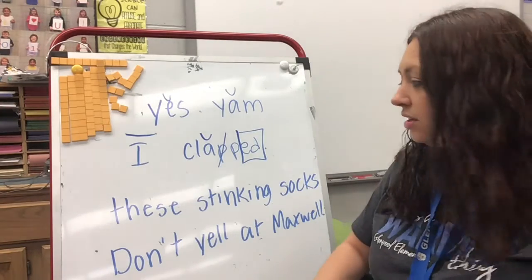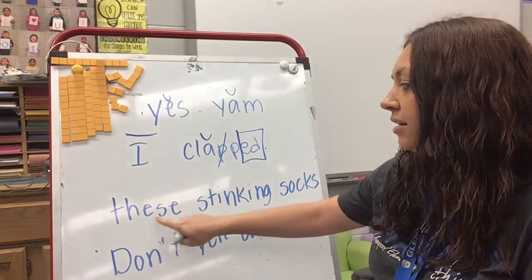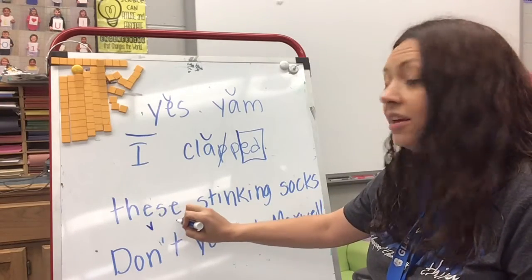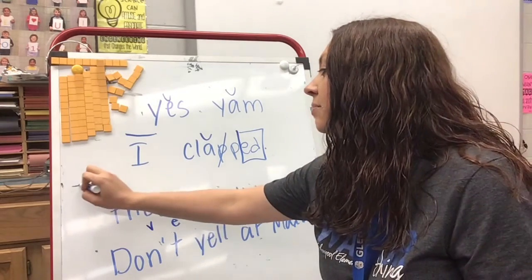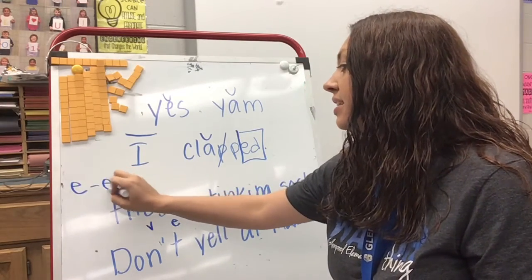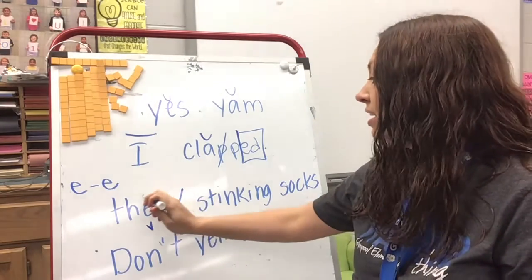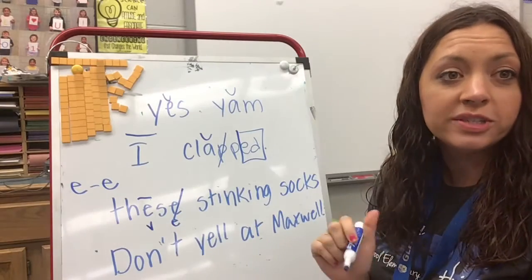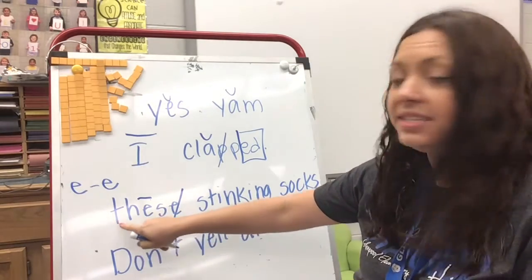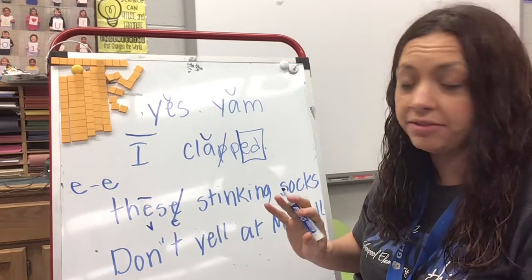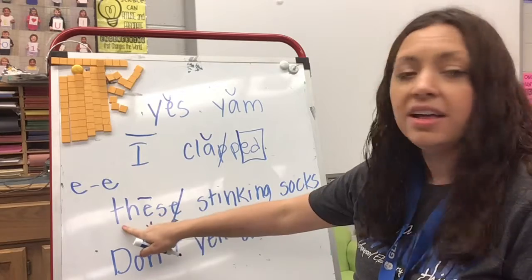Let's look at this next word. Let's find my vowels. I have a vowel here and I have a vowel here, and that vowel is an E. So I know this is going to be an E-consonant-E word. That means that this last E is silent and my other E is long, so it's going to say its name. And then I also see the T-H, which I know is our digraph, and it's going to say th.